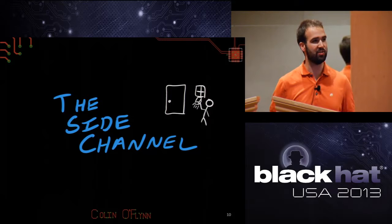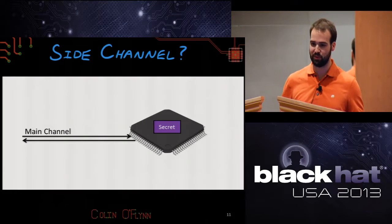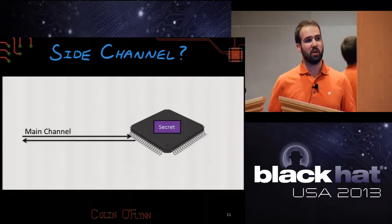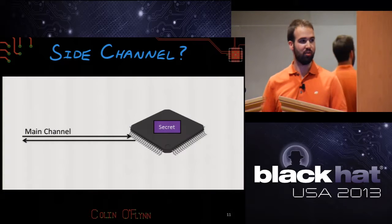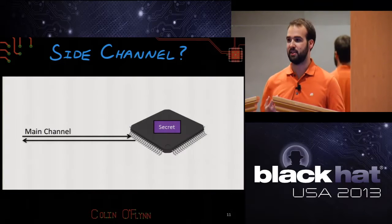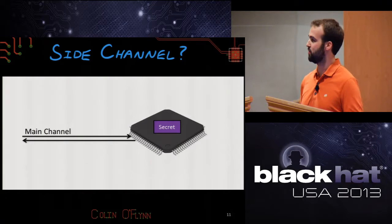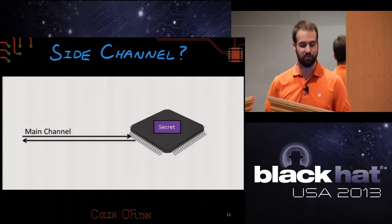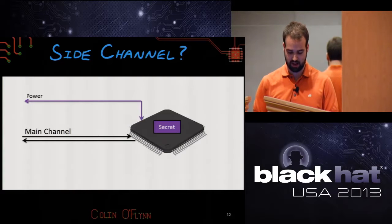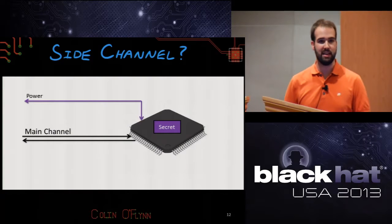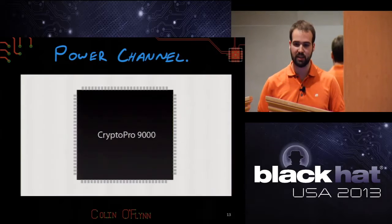Now I'll start introducing what is the side channel. Maybe you already know what power analysis is — maybe you don't. We have a crypto device: a smart card, an embedded device with a bootloader. We have a channel, and we can send it a request — 'please encrypt this' — and it responds. We can cause the device to run an encryption operation all day and you're not going to figure out the secret inside it. But it has other channels, other communication methods it didn't intend to broadcast, and it is telling you something about the secret inside it. What we use is the power channel.